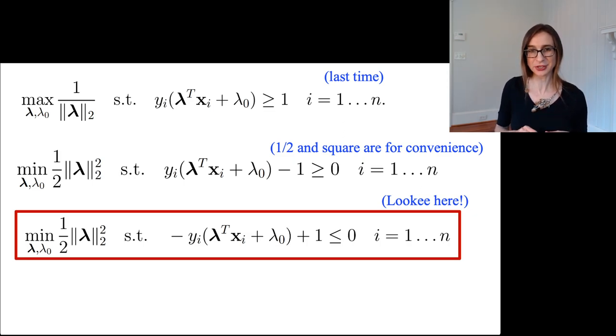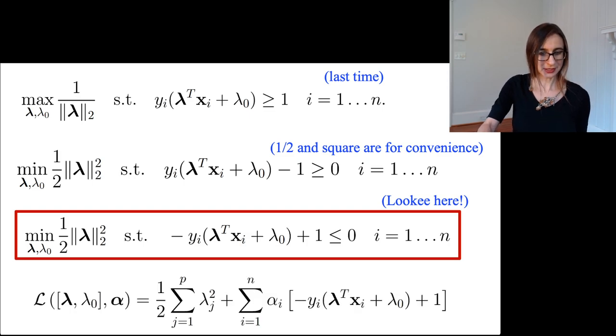You'll notice that all of the constraints are inequality constraints. There are no equality constraints, so there are no h terms. In the Lagrangian you're only going to expect alphas and there's not going to be any betas. I formed the Lagrangian there and it's exactly what you'd expect.